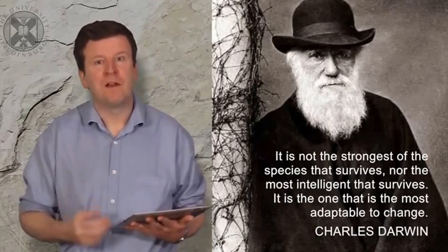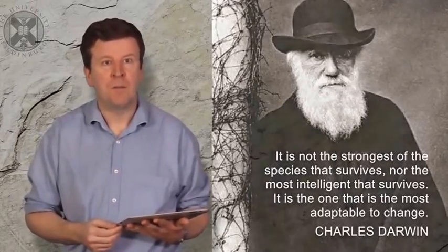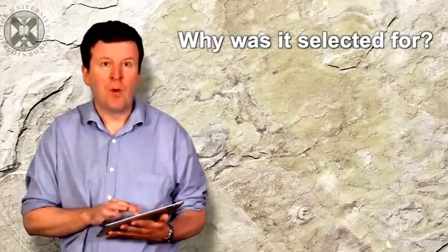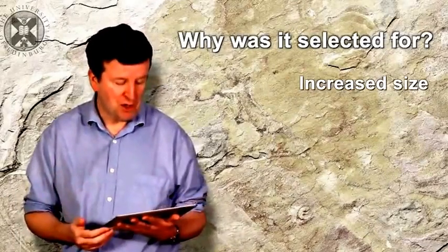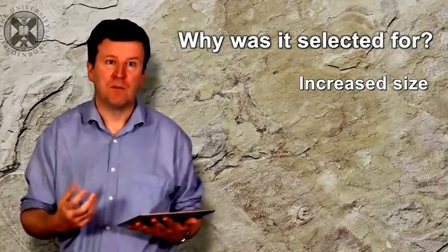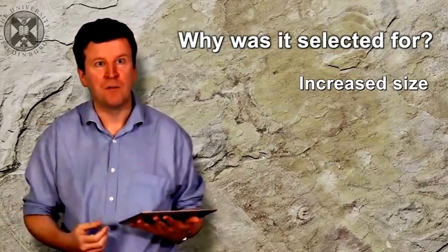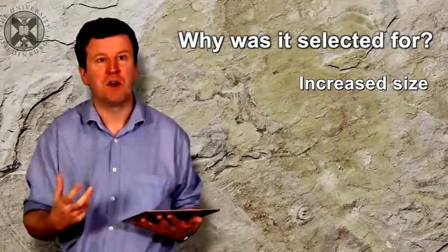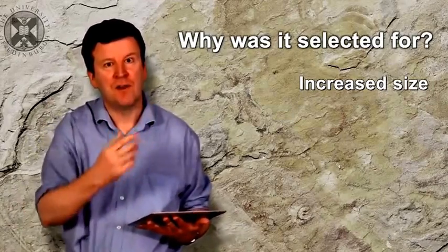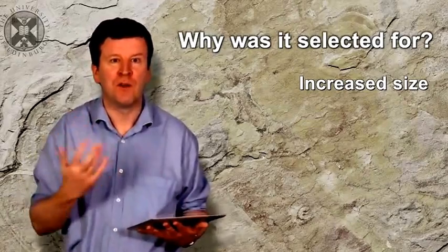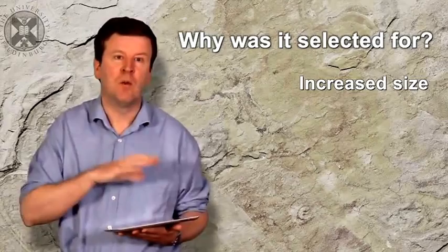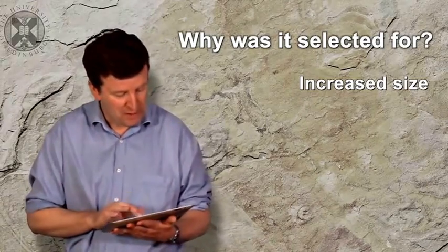But once multicellular life did arise, why was it selected for? Why did it persist? Well, there are a number of possibilities. First of all, once organisms became multicellular, they became larger. And some sort of arms race may have occurred between organisms. Larger organisms would have evolved to eat smaller organisms. Then there would have been a selection pressure, a Darwinian selection pressure, for organisms to get larger, to eat those new predators, and so on and so forth. And an arms race becomes established as organisms become larger and more complex to deal with the new biological environment in which they're living.